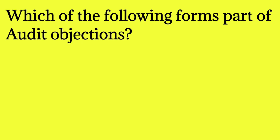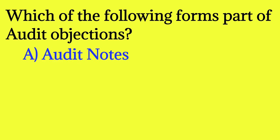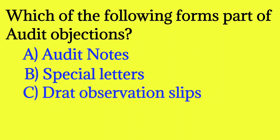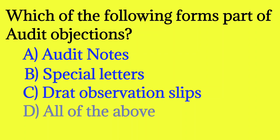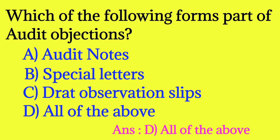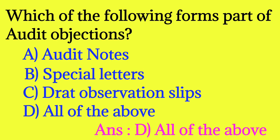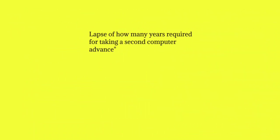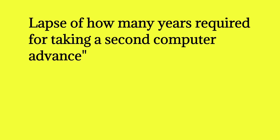Which of the following forms part of audit objections? Option A: audit notes. Option B: special letters. Option C: draft observation slips. Option D: all of the above. The answer is all of the above.